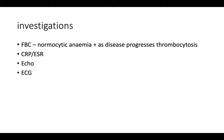Moving on to investigations. As with any child presenting with a fever, there are a number of investigations to consider. On a full blood count, you can sometimes see a normocytic anaemia. When the disease starts, the platelet count is often normal, but as the disease progresses it can rise and you can see a thrombocytosis. CRP may also be elevated. Two other really important tests to perform — even as a baseline — are an echo and an ECG, which I'll explain in more detail shortly.